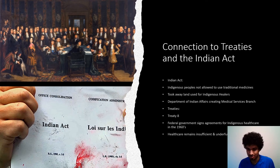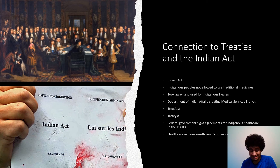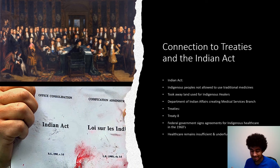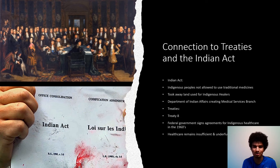This relates to Jordan's Principle because Jordan's Principle is kind of moving back toward giving Indigenous people their land back for healing and health care, and letting them have more freedom in actually healing themselves. As for the connection to treaties, there was an agreement made by the federal government in the 1960s that led to health care remaining insufficient and underfunded. Also, Treaty 8 described how every Indian agent on the reserves had a medical kit — but there was only one kit for every Indigenous person, which led to lots of disease and problems spreading throughout communities because there was not enough for everyone.